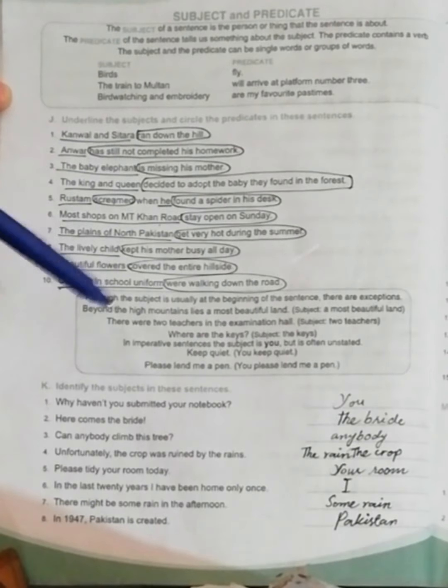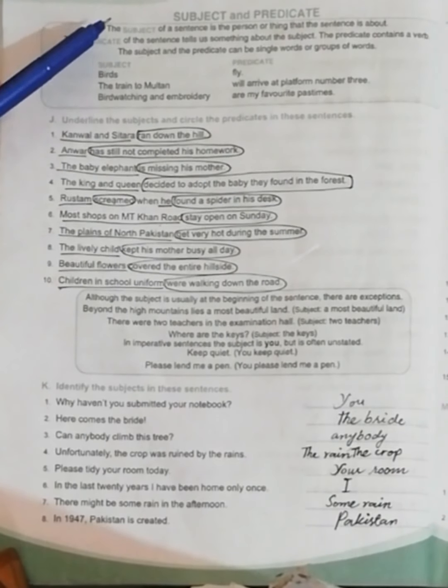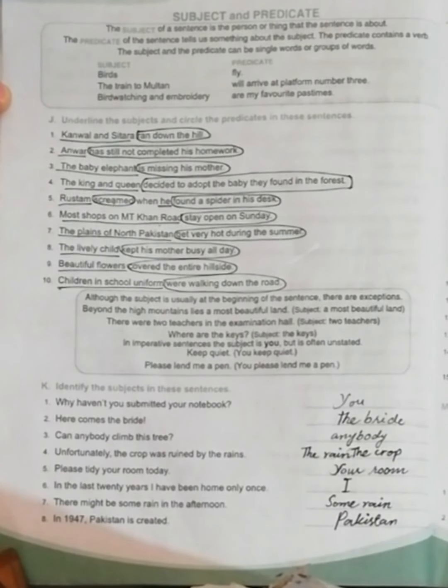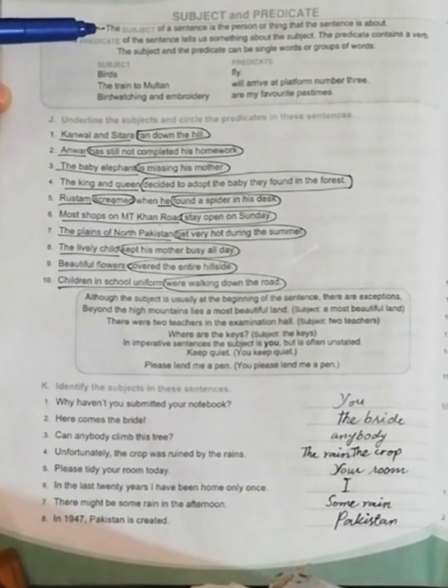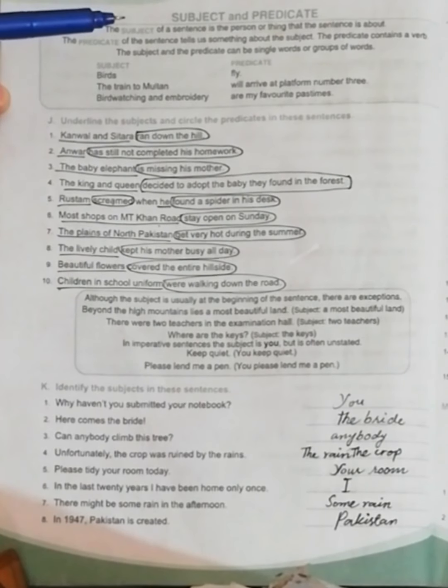So first of all we will learn about the subject and the predicate and then we will solve the sentences. The subject of a sentence is a person or a thing that the sentence is about, and the predicate of the sentence tells us something about the subject. The predicate contains a verb.